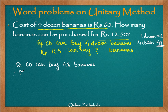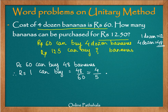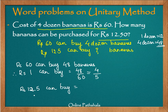Therefore, rupees 1 can buy 48 divided by 60, which simplifies to 4/5 bananas. So 1 rupee can buy 4/5 of a banana. Now, rupees 12.5 can buy how many bananas? It is simply the number of bananas rupees 1 can buy, multiplied by 12.5. So we calculate 4/5 multiplied by 12.5.